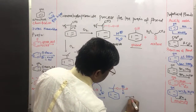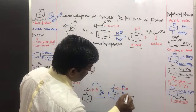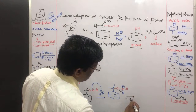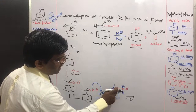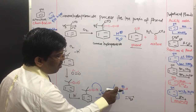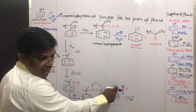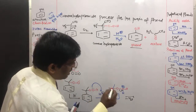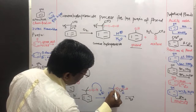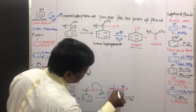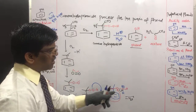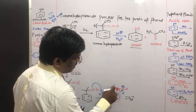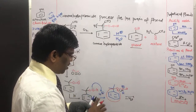The oxonium ion loses a water molecule. After losing water, the oxygen attains a positive charge. To satisfy that positive charge, the phenyl ring along with its bond migrates or rearranges onto the oxygen. As a result, the carbon becomes positively charged.